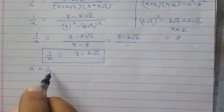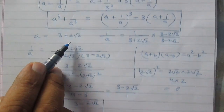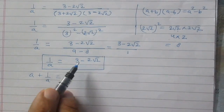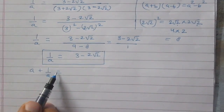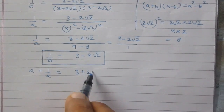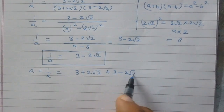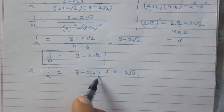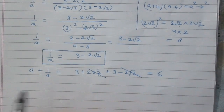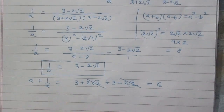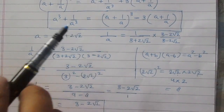Now let us find a plus 1 by a. The value of a is 3 plus 2 of square root 2 and the value of 1 by a is 3 minus 2 of square root 2. So a plus 1 by a is 3 plus 2 of square root 2 plus 3 minus 2 of square root 2. The 2 root 2 terms cancel, giving a plus 1 by a equals 6.